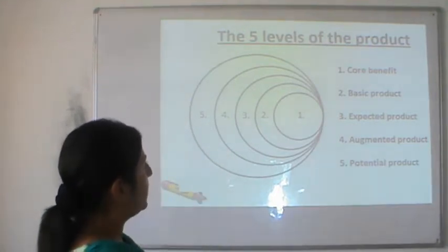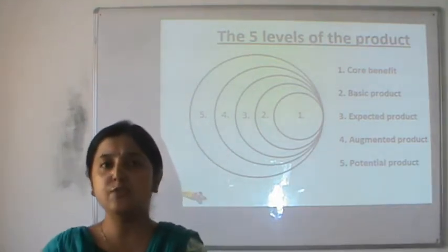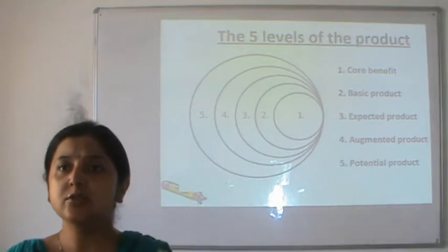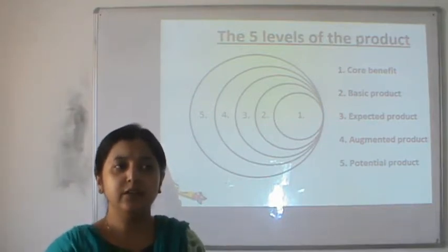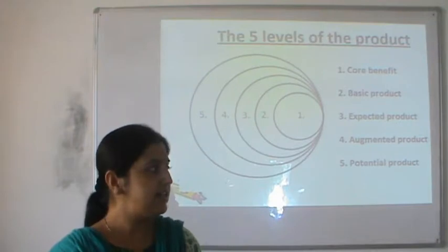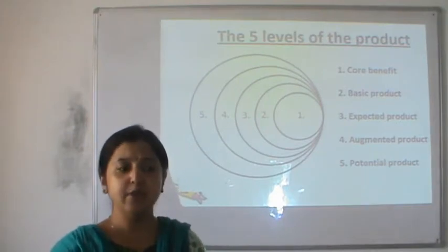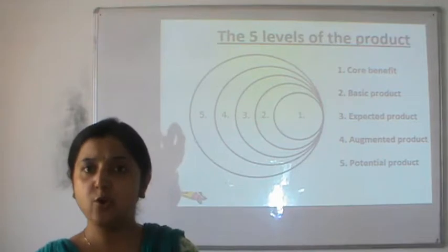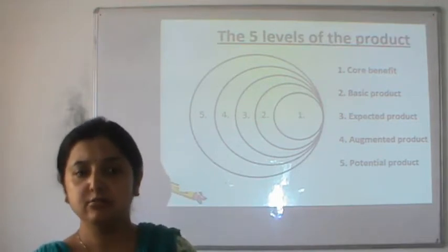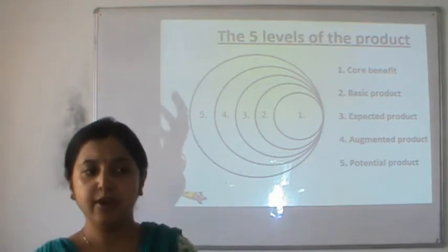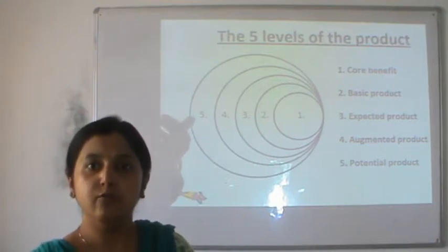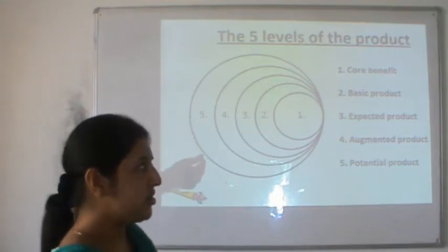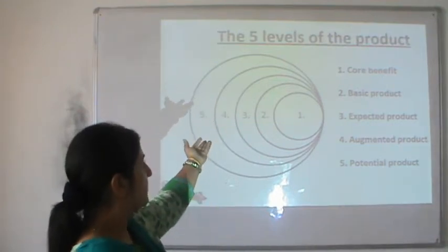At level two, the basic product: if you are paying a good amount of money, you expect proper lighting and ventilation facilities, windows for proper aeration, and if there is an attached washroom, proper sanitation and water facilities. As we progress to outer levels, the customer becomes more and more demanding and is also ready to pay for it — that brings us to the expected product.